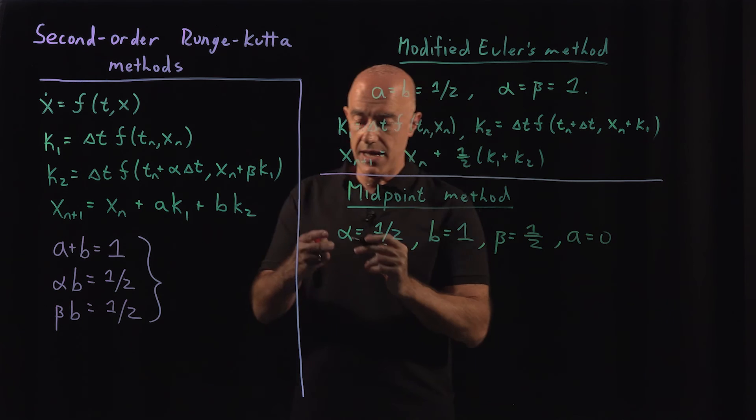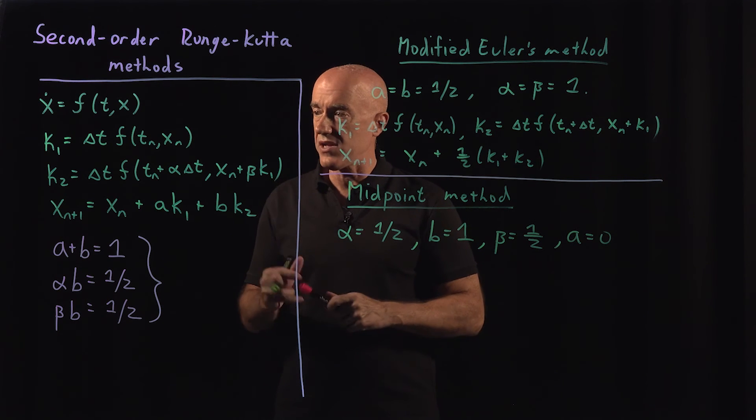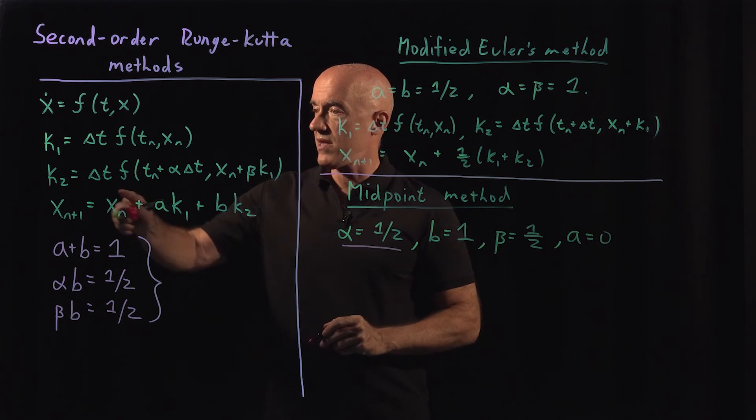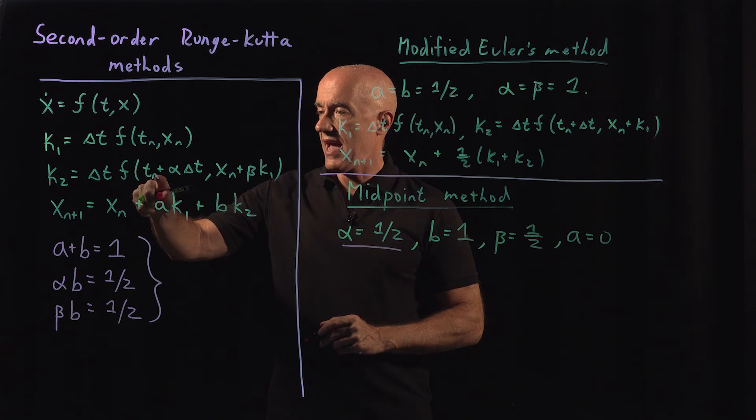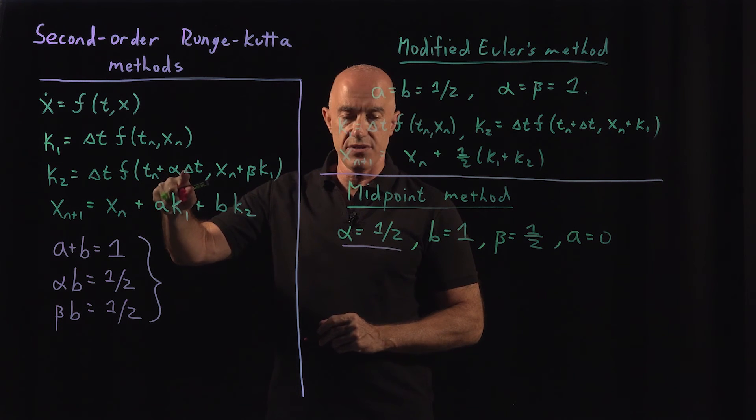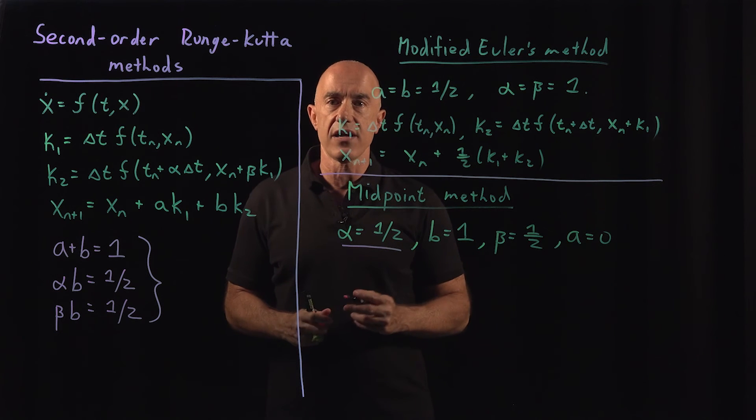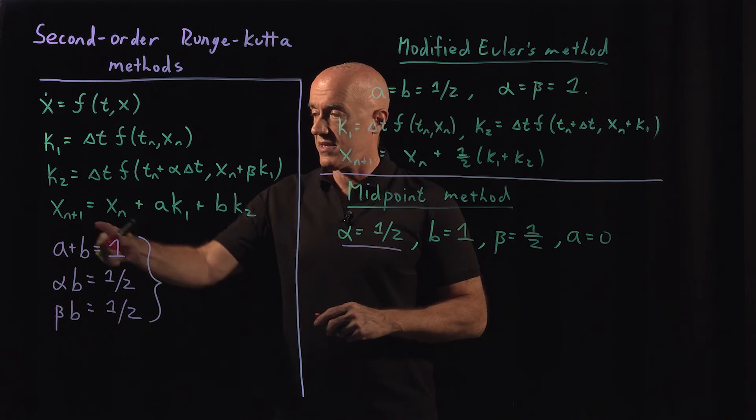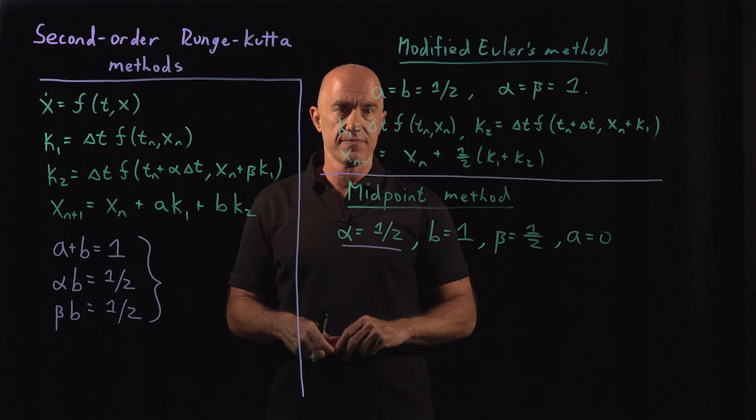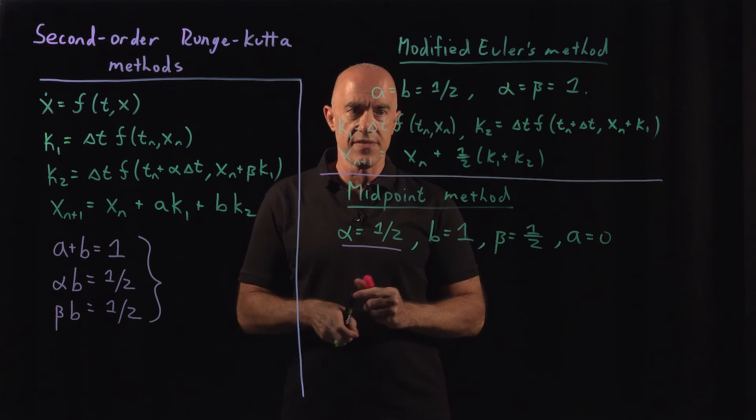So just by specifying this one value that we're evaluating, we want to evaluate f at t_n plus 1/2 delta t, you'll see all the other values fall out, okay? That's what these constraints are doing for us.